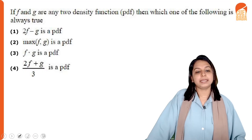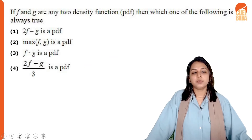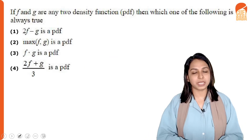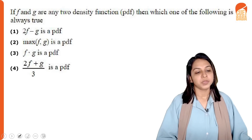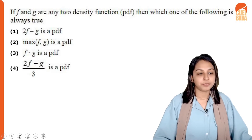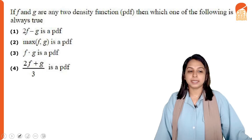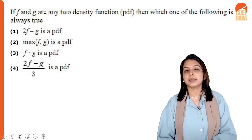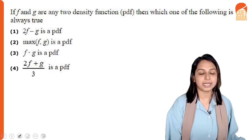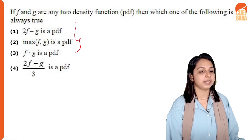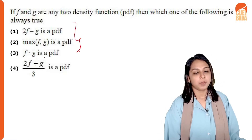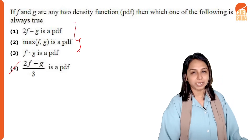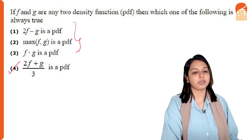If f and g are two density functions, then which of the following is always true? Four statements are given: 2f minus g is a pdf; maximum of f, g is a pdf; f·g is a pdf; and 2f plus g by 3 is a pdf. We can see that the first three need not always be correct. The correct option is 4: 2f plus g by 3 will always be a pdf if f and g are two density functions.